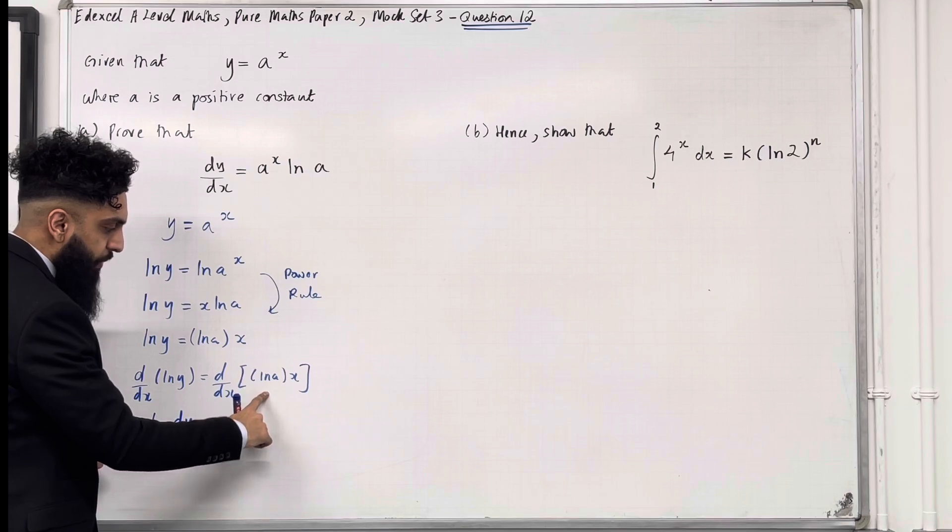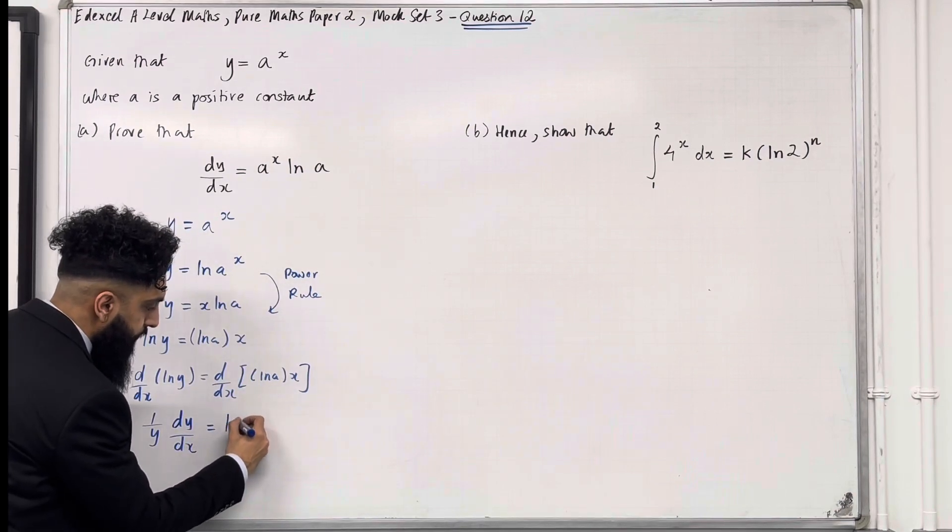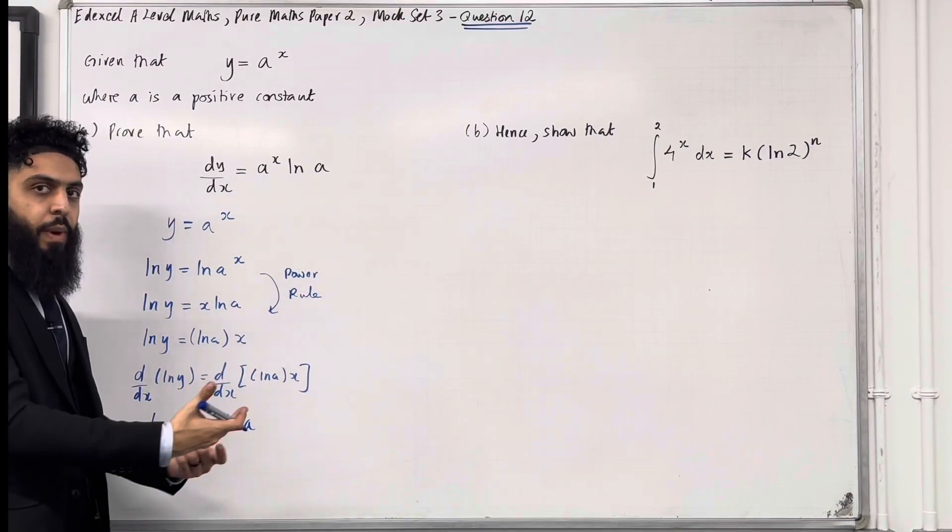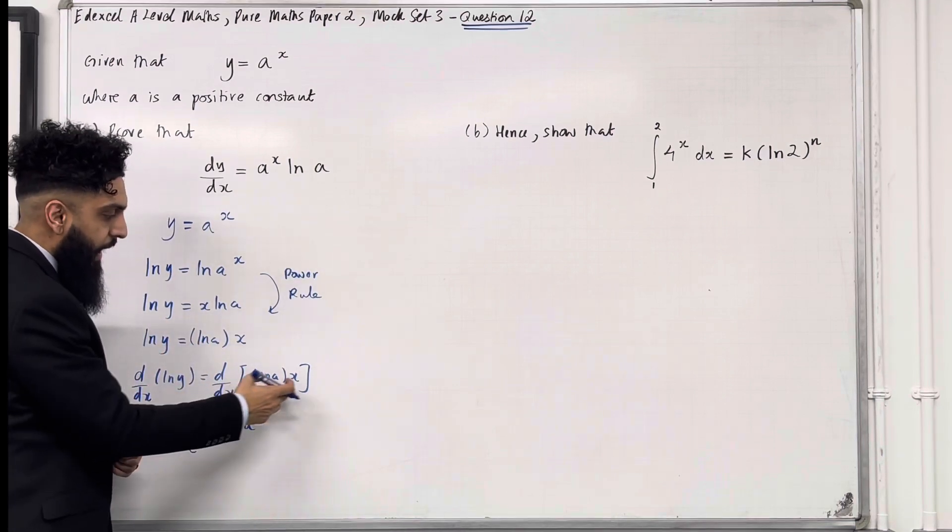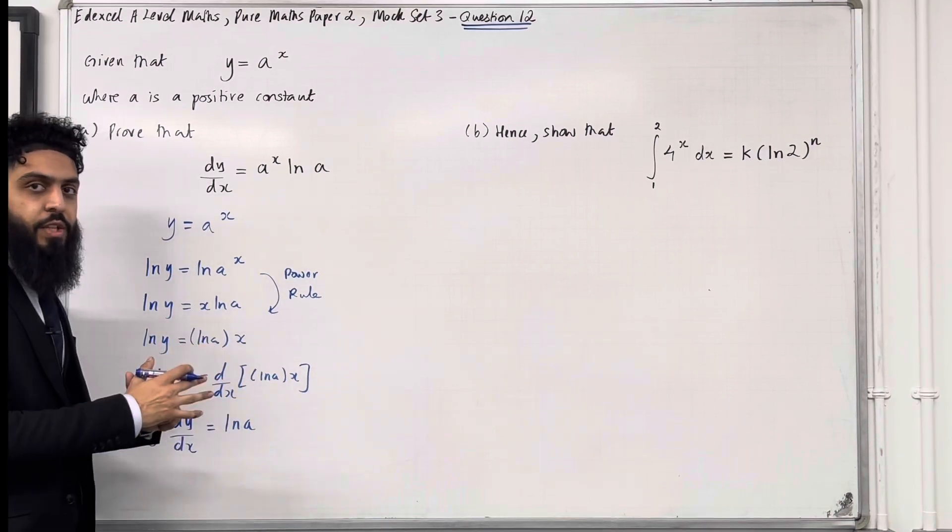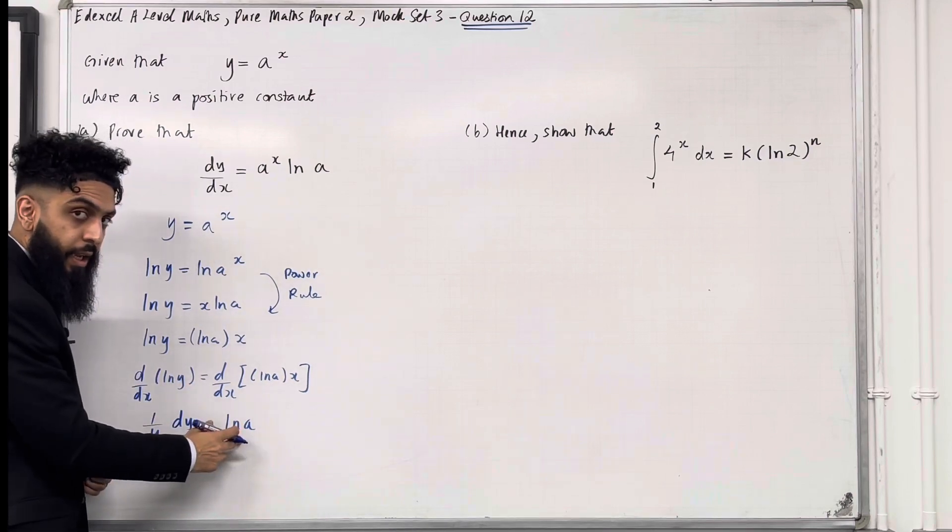Differentiating this with respect to x will just be ln a. Because if you add 2x and differentiate 2x with respect to x, it's just 2. If you've got ln a, x and you differentiate this with respect to x, it is just ln a.